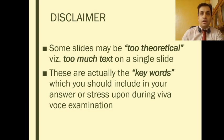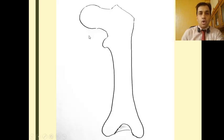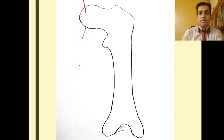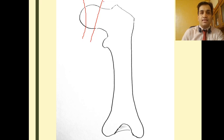Let us start with what fractures you can encounter in the femur. Proximally, you can have fracture of the head of femur — the Pipkin fracture. Going distally, you can have a fracture at the junction of head and neck called a sub-capital fracture neck femur. Further down is the basi-cervical fracture at the base of the neck.